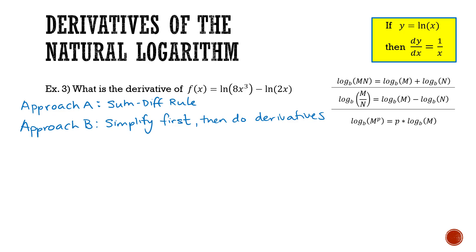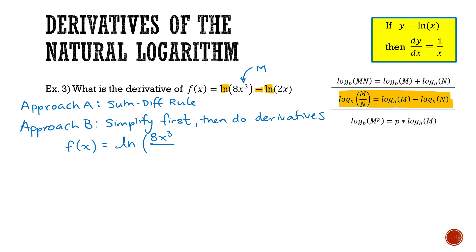To combine the logarithms, I'll use the quotient rule of logarithms: log of m over n equals log of m minus log of n. Here ln of 8x cubed is m and ln of 2x is n. So ln of 8x cubed minus ln of 2x simplifies to ln of 8x cubed over 2x, which further simplifies to ln of 4x squared. This isn't yet in the form I want, but it's simplified so I won't need the sum difference rule and the final derivative should be clean.